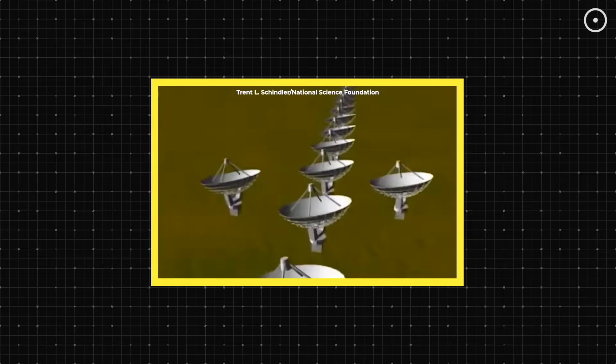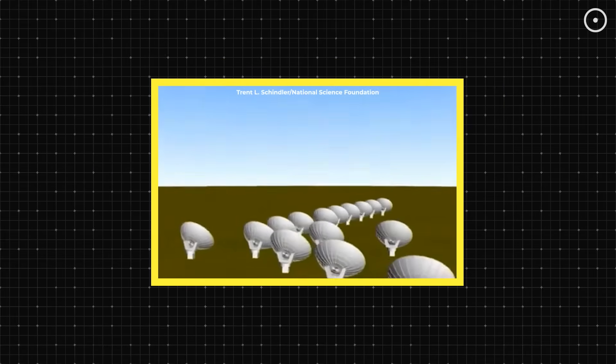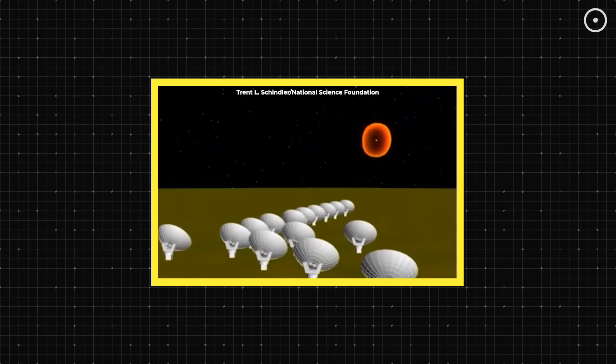Several satellites were temporarily blinded, and some astronomers initially thought we were under attack by an alien civilization because the energy signature was unlike anything they'd ever seen.